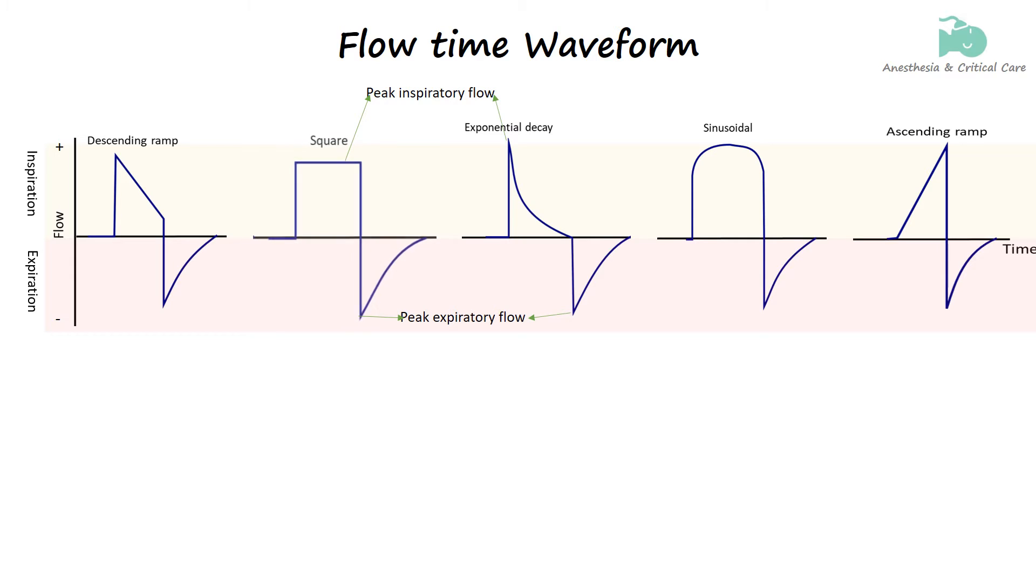The square flow waveform is characteristic of volume-controlled ventilation, where the ventilator delivers a preset volume of air to the patient at a consistent, unchanging rate throughout the inspiratory phase. This constant flow rate is represented by a flat, horizontal line on the flow time waveform, indicating that air is being delivered steadily into the lungs.